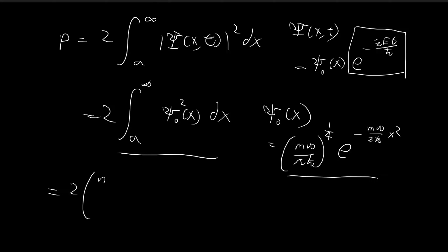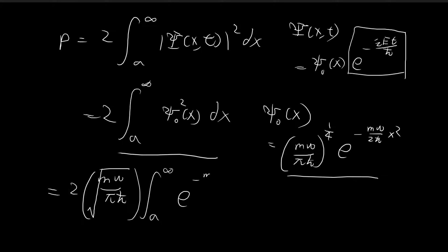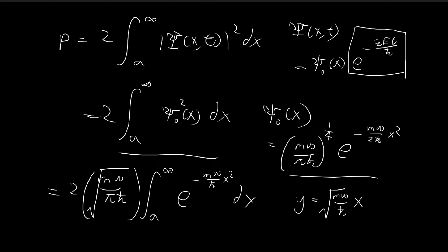Squaring this, I pull the constants out — so instead of the power of one-fourth I get the power of one-half, which is just the square root. Inside the integral I get e to the power of negative m omega over h-bar times x squared dx. To simplify, I use the substitution y equal to the square root of m omega divided by h-bar times x, and perform integration by substitution.